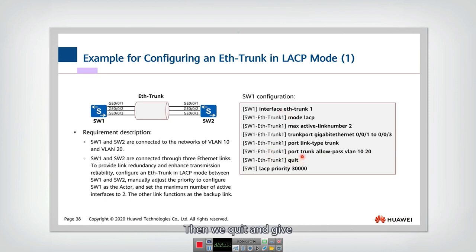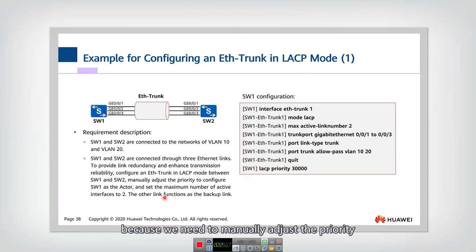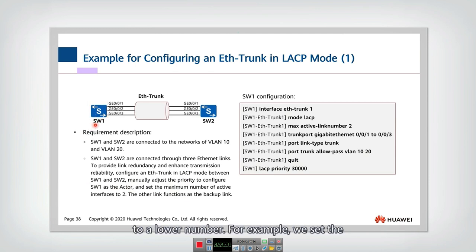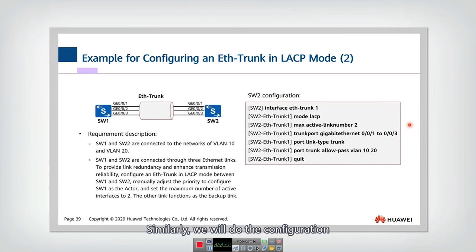Then we quit and come back to switch one. Because we need to manually adjust the priority to configure switch one as the actor, we need to set the priority of switch one to a lower number. For example, we set the priority to 30,000. Similarly, we will do the configuration for switch two.